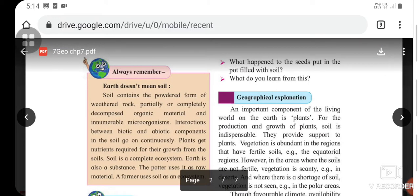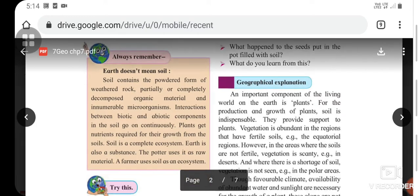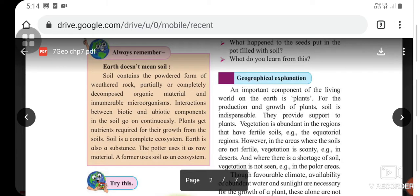Always remember: earth does not mean soil. Soil contains the powdered form of the weathered rock, partially or completely decomposed organic material, and innumerable microorganisms. Interactions between biotic and abiotic components in the soil go on continuously. Plants get nutrients required for their growth from the soils. Soil is a complete ecosystem.